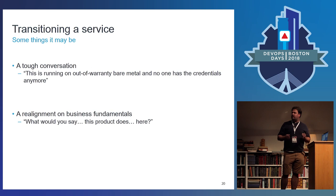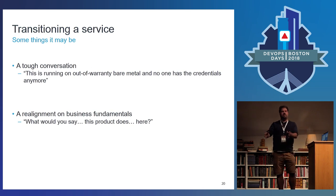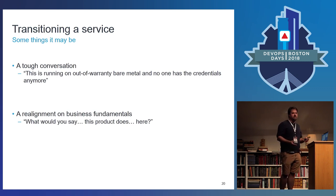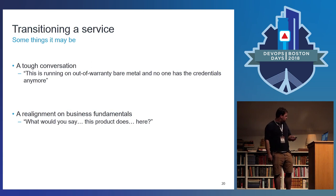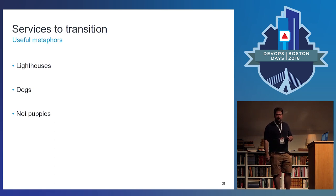We want to focus on what the actual business outcomes are. Sometimes this is a tough conversation — you'll have things that need to be transitioned that are not in a great state. You might run into: 'We have this system, you need to take it, no one knows anything about it, we don't have the passwords, good luck.' These can be tough conversations. The solution there is sometimes you inherit the code but not necessarily the architecture — you get it up and running elsewhere and make sure you can swap all the dependents over.